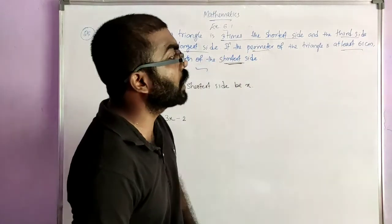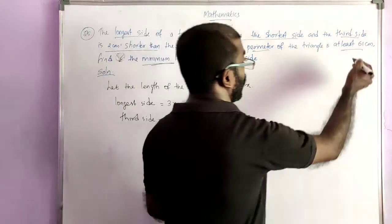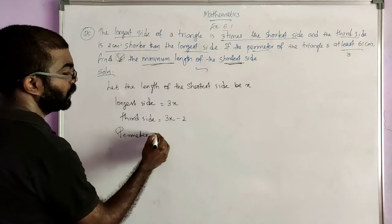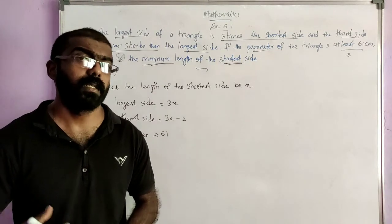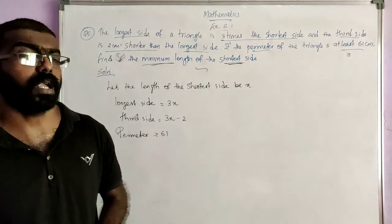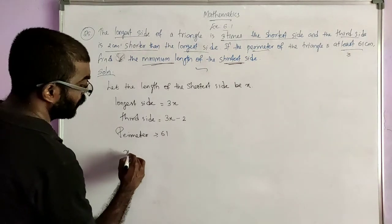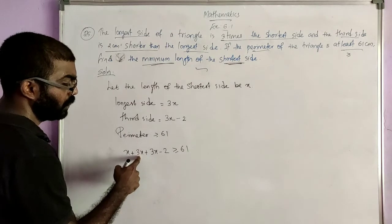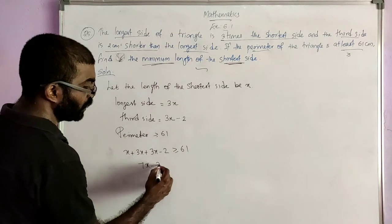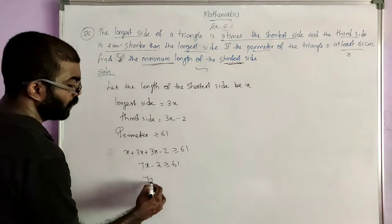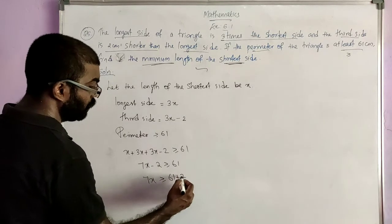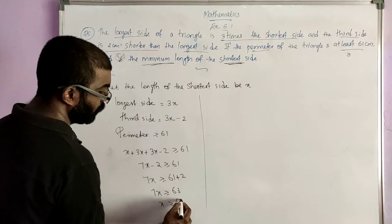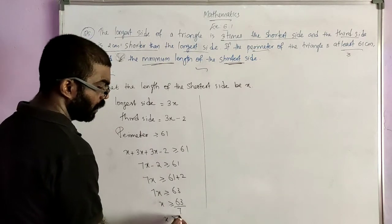The perimeter of the triangle is at least 61 — at least means we use greater than or equal to. Perimeter is sum of all three sides, so X plus 3X plus 3X minus 2 is greater than or equal to 61. X plus 3X is 4X, and 4X plus 3X is 7X. So 7X minus 2 is greater than or equal to 61. 7X is greater than or equal to 63. X is greater than or equal to 63 divided by 7, so X is greater than or equal to 9.